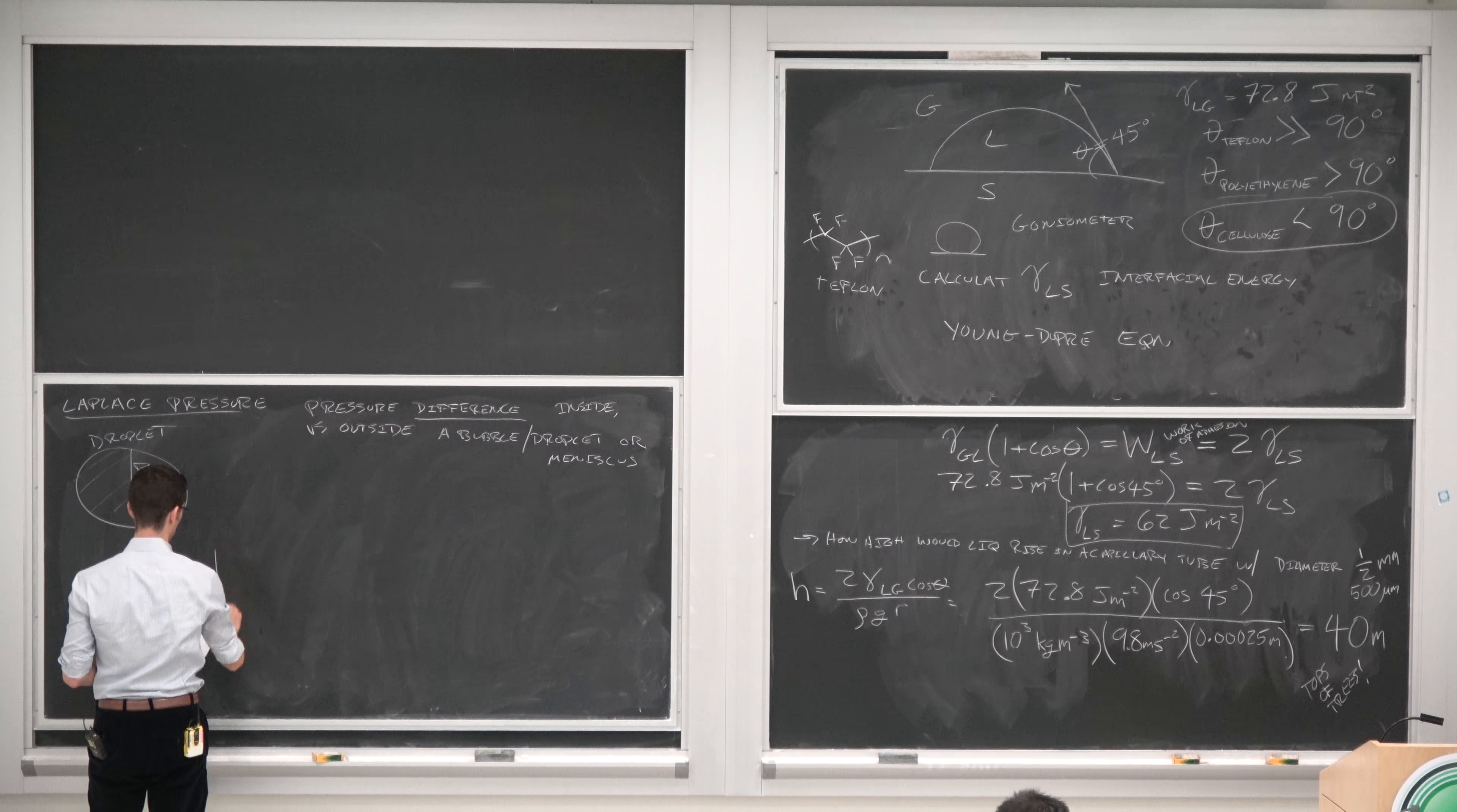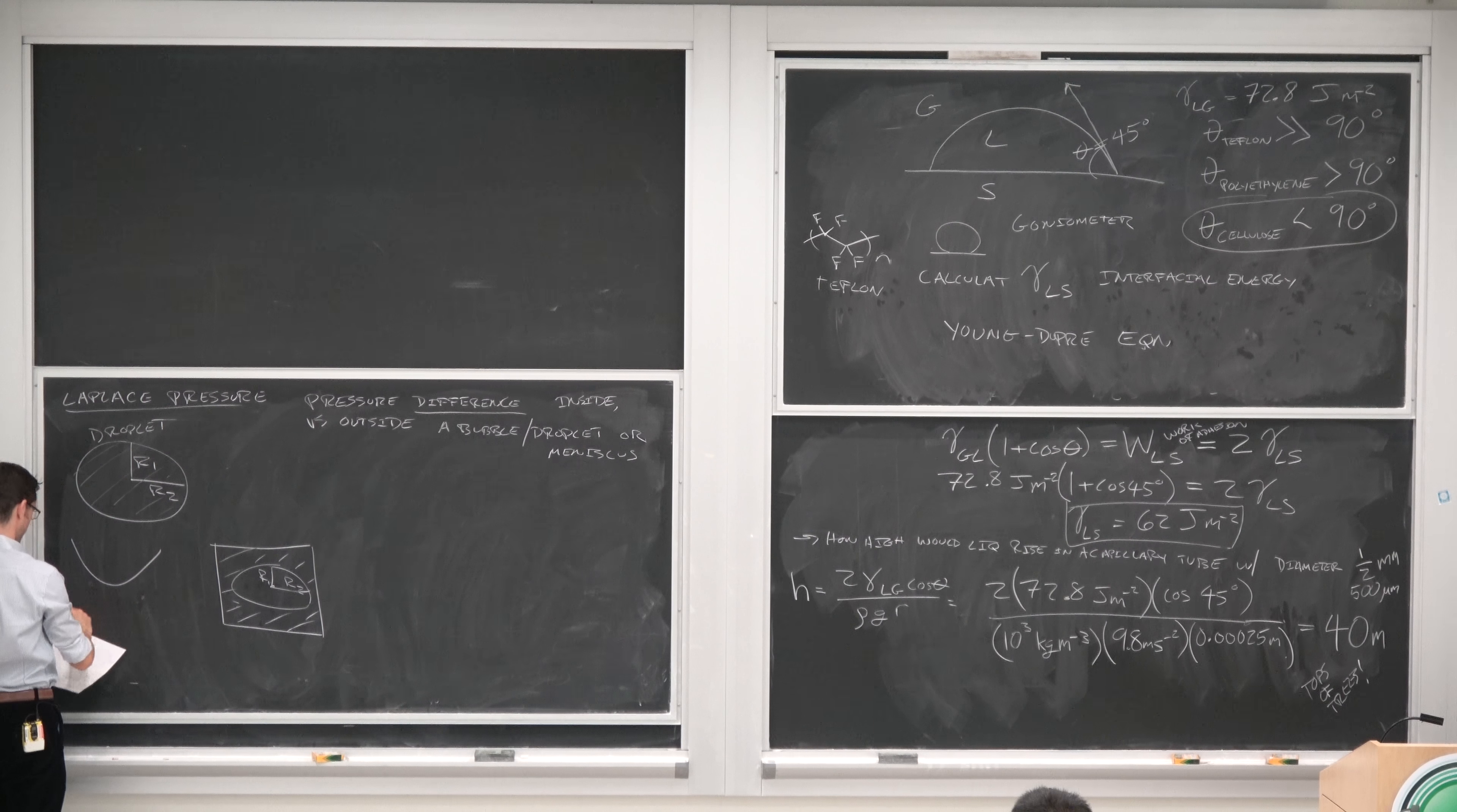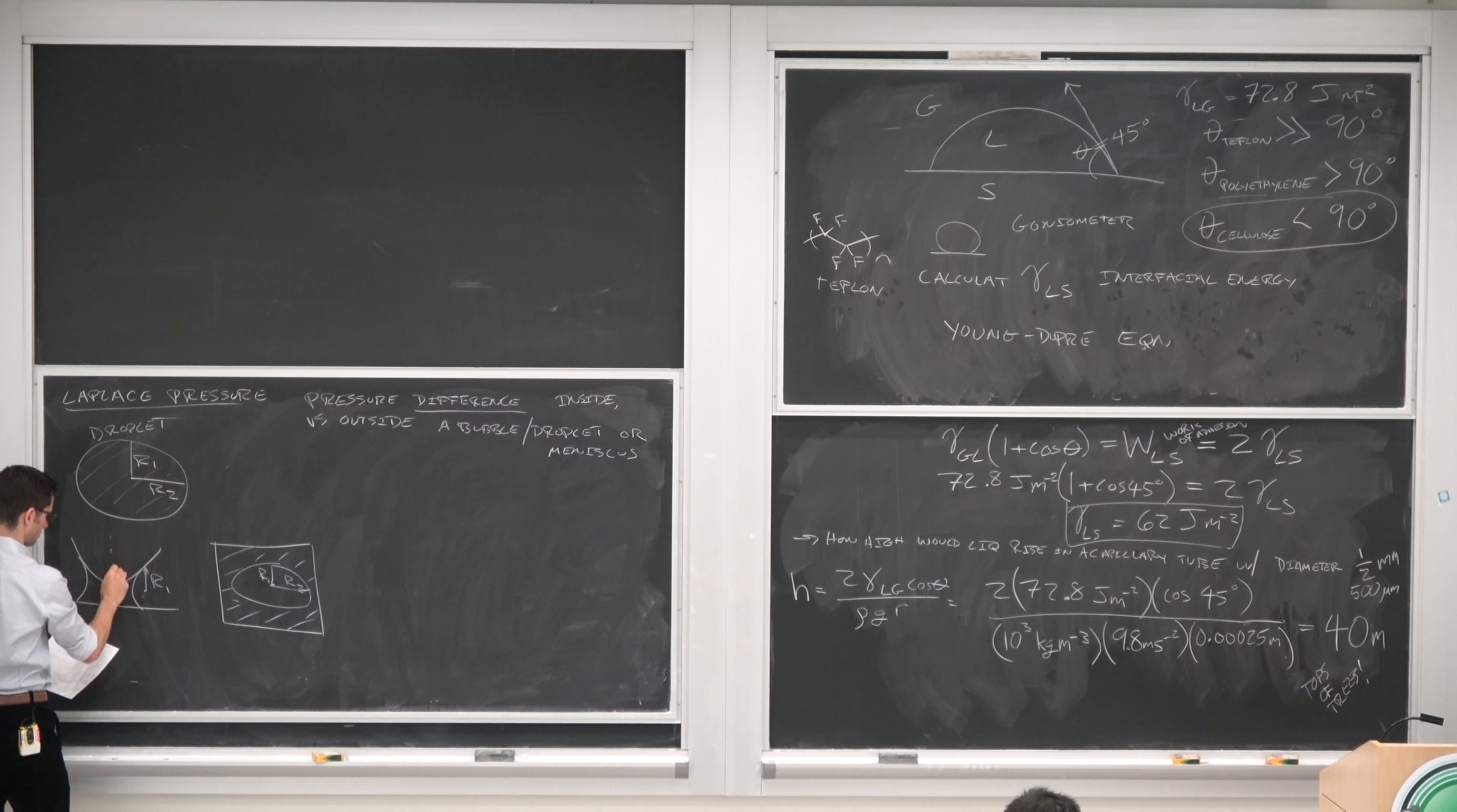A bubble is like an inverse droplet where maybe this is a condensed phase and the interior is a gas phase, R1 and R2. It also works for menisci, where this is some round object like our finger that's wet, pressing down and lifting up a little bit on a flat surface. And in this case, we're talking about radii of curvature of the meniscus.